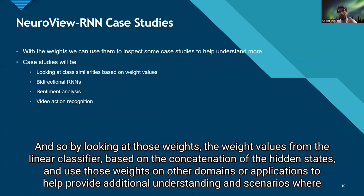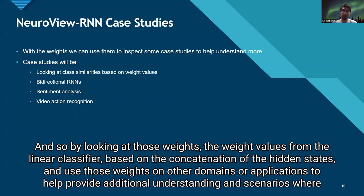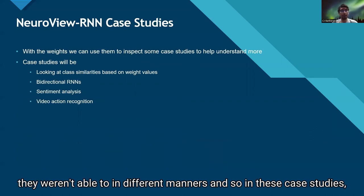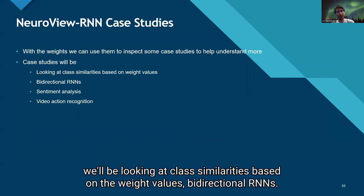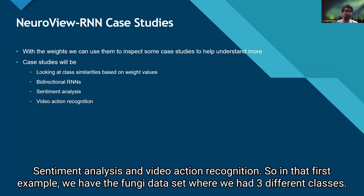By looking at those weight values from the linear classifier based on the concatenation of the hidden states, we can apply them to other domains or applications to provide additional understanding. In these case studies, we'll be looking at class similarities based on weight values, bidirectional RNNs, sentiment analysis, and video action recognition.